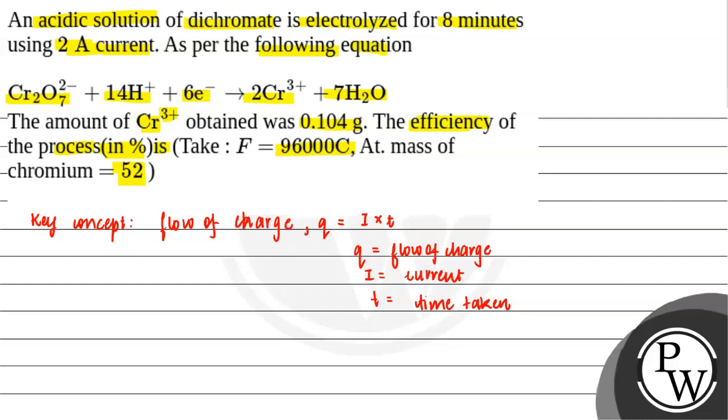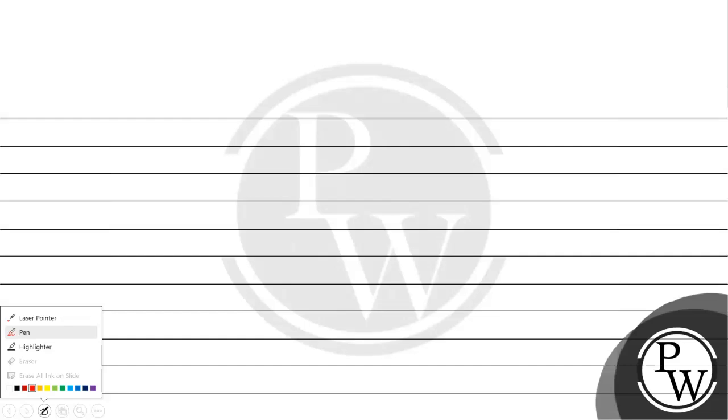We have been given it takes 8 minutes. There is one more formula - efficiency in percentage is calculated using mass actual divided by mass theoretical, multiplied by 100. That's how we calculate efficiency percentage.